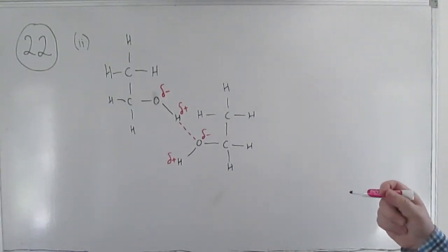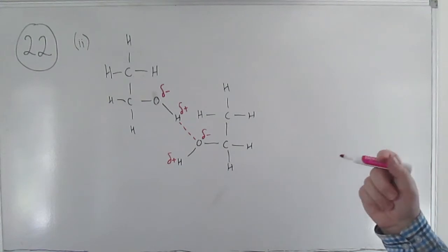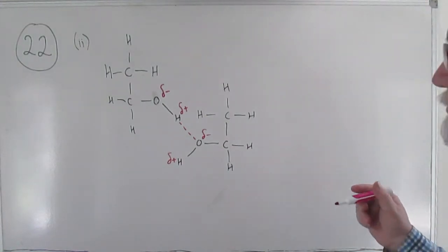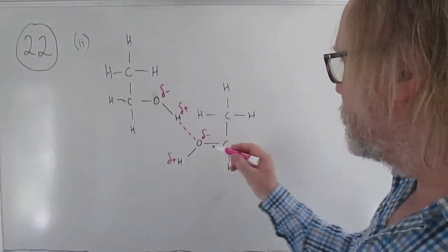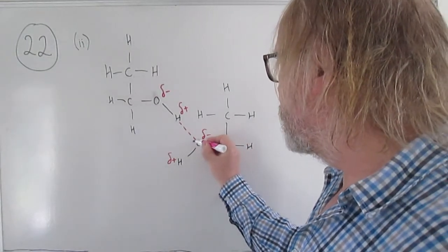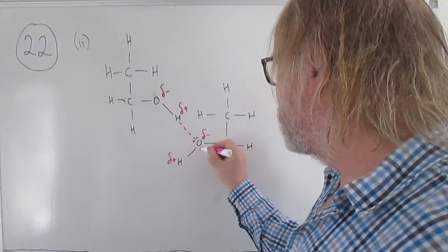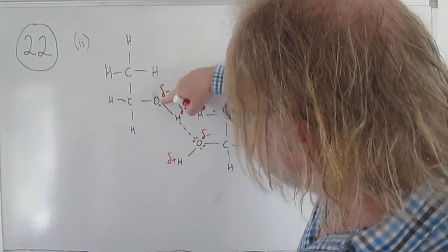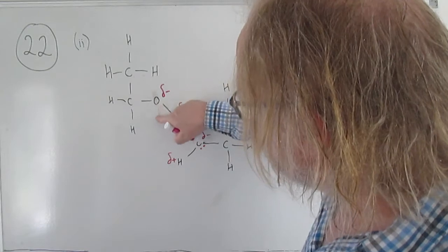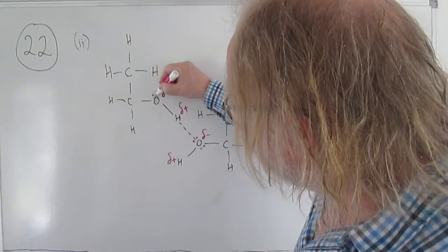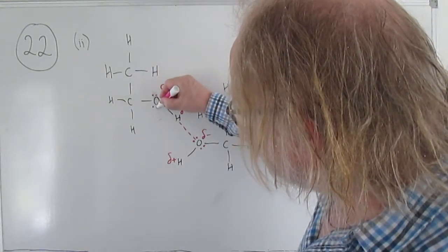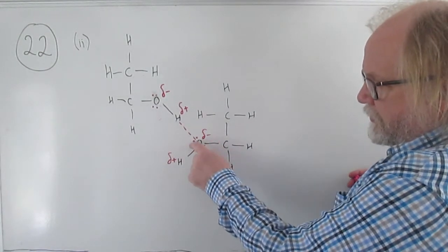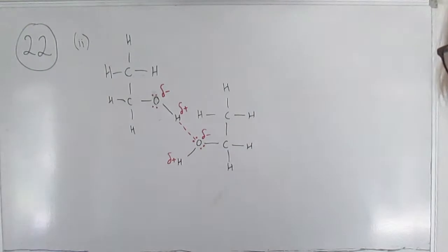The final detail is that you have to remember that those oxygens each have two lone pairs, and you're supposed to show the hydrogen bonds pointing directly at one of the lone pairs. So you put the two lone pairs on, and the oxygen end of the hydrogen bond should be pointing directly at one of the lone pairs.